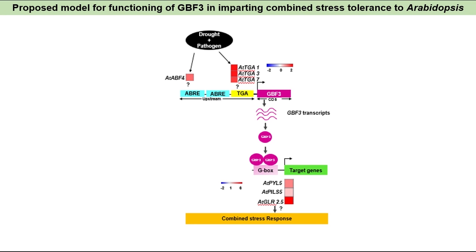The proposed model for functioning of ATGBF3 under combined stress is as follows: combined stress induces ABA-responsive element binding factors and TGA transcription factors, which bind to the ABRE and TGA elements present in the upstream region of the GBF3 gene. This leads to induction of ATGBF3, and the expressed GBF3 protein binds to G-box elements present in target genes like ATPIL5, ATPILS5, and ATGLR2.5, leading to a response to combined stress.